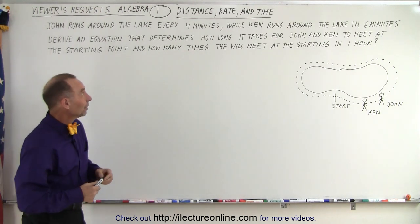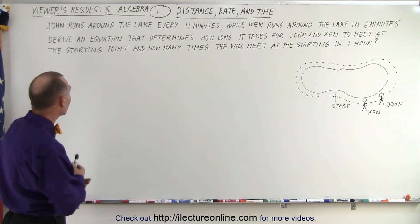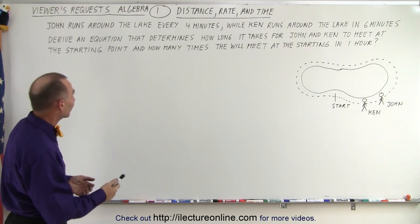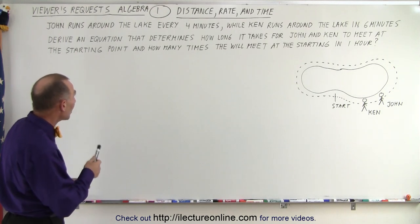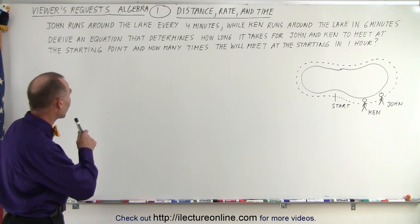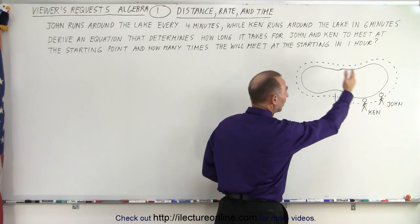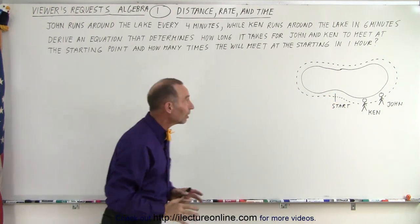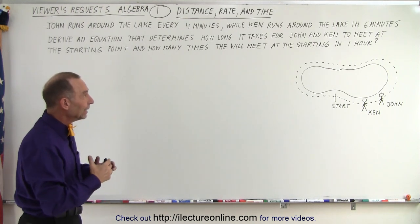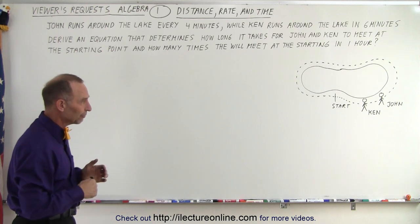Here's our first one. It deals with distance, rate, and time, and the problem reads as follows: John runs around the lake every four minutes while Ken runs around the lake in six minutes. Derive an equation that determines how long it takes for John and Ken to meet at the starting point, assuming they both start at the starting point. How many times will they meet in an hour, assuming they run for an hour and keep the same pace?